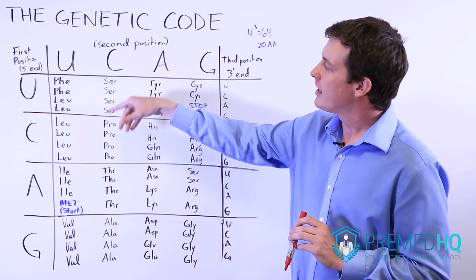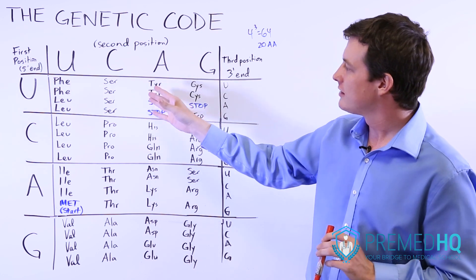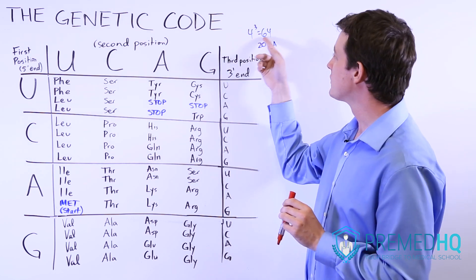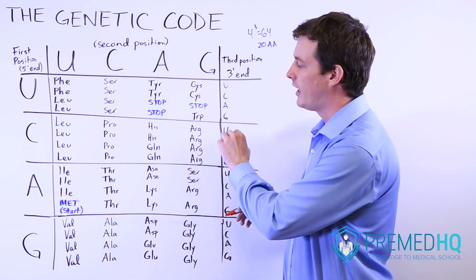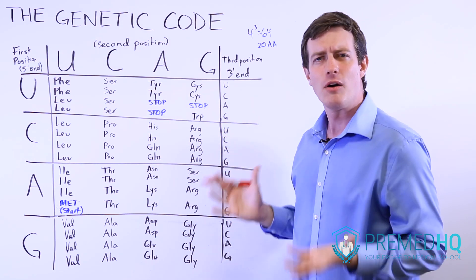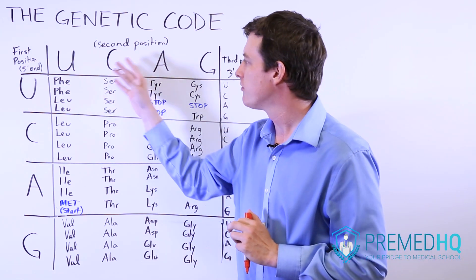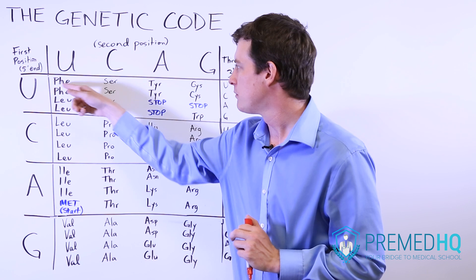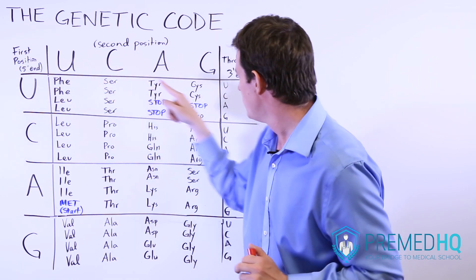As you look through this, you'll notice that a lot of different codons — a lot of different three-base combinations — code for the same amino acid. This is partly because we have 64 possible combinations but only 20 amino acids. This leads to a vocabulary term you might hear: the genetic code is degenerative. What that means is that several different three-base codons can code for the same amino acid. For example, phenylalanine can be coded with UUU or UUC.